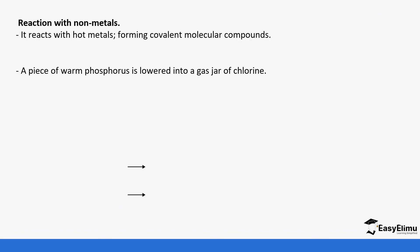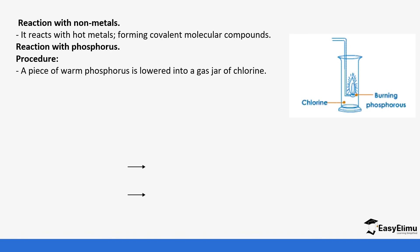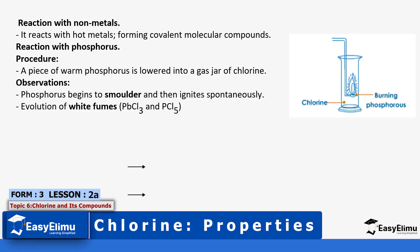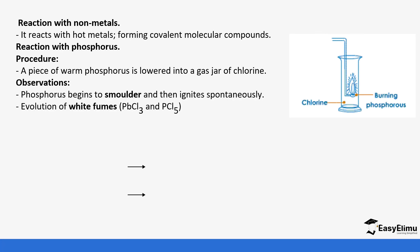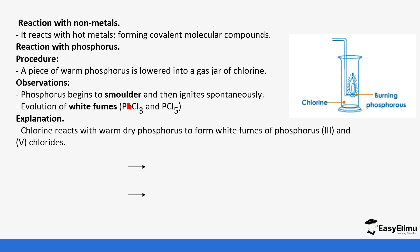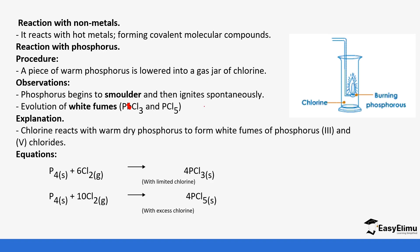Chlorine also reacts with non-metals and molecular compounds, for example phosphorus. If you warm phosphorus and lower it into chlorine, it ignites spontaneously and produces white fumes of phosphorus chloride — forming phosphorus(III) chloride and phosphorus(V) chloride. Phosphorus(III) chloride is formed when there is a limited amount of chlorine, while phosphorus(V) chloride is formed when there is excess chlorine.